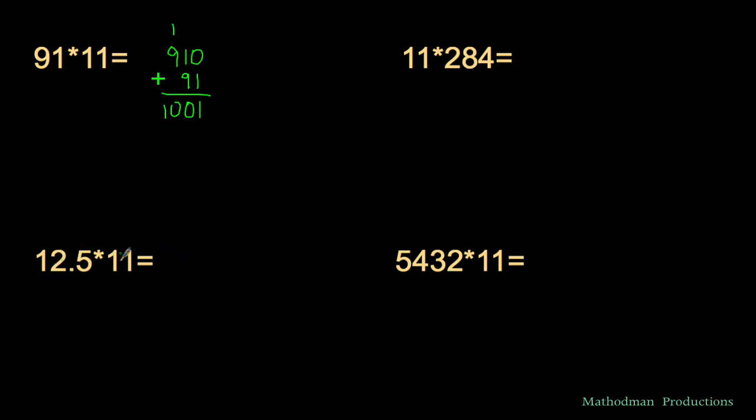Even when it's a decimal, 12.5 times 11. 12.5, carry this decimal place one place to the right. 12.5 times 10 is just 125. Then add what you began with, 12.5. 5 plus 2 is 7, 2 plus 1 is 3, and then the 1. Boom, pull through really easy.